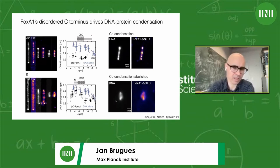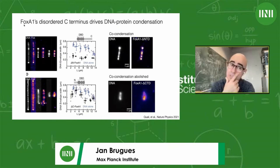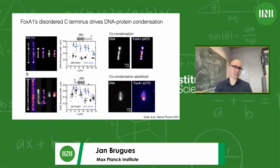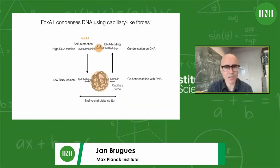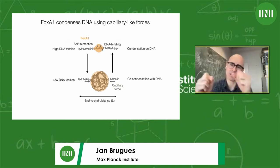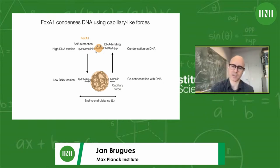These two pieces of data suggest FoxA1 can co-condense DNA. Biochemically, we used existing mutants that chop off the C-terminus, N-terminus, and mutate the DNA binding domain. The capacity to co-condense is unaffected unless you remove the C-terminus, suggesting that weak interactions mediated by the C-terminus drive this co-condensation. The picture that emerges is: droplets nucleate and wet the DNA strand; if tension is too high, FoxA1 self-interactions can't reel in DNA, but lower tension allows co-condensation.